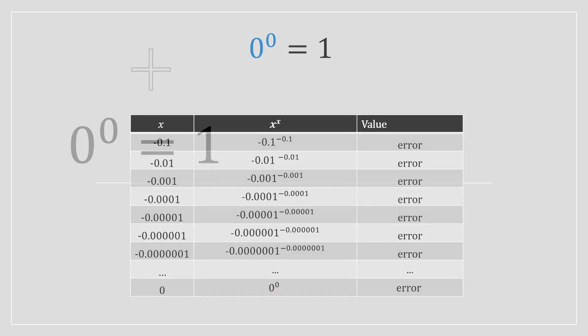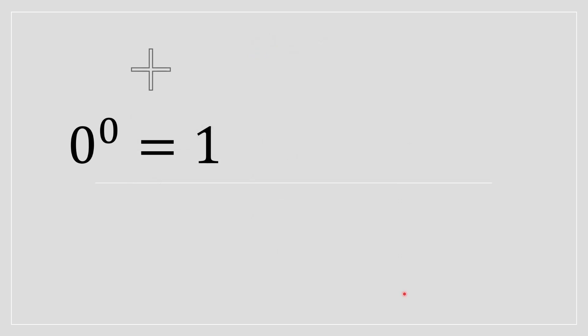So just to summarize everything, from the positive side, 0 to the power of 0 is equal to 1. However, if we consider the negative side, because there's two sides to every story, you're going to see that it gives you an error. And one side gives you one thing, and another side gives you a different thing, but it's supposed to give you the same thing, but it does not.